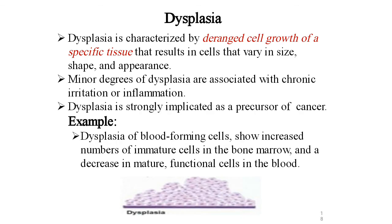Dysplasia is characterized by disordered growth of a specific tissue that results in cells that vary in size, shape, and appearance. Minor degrees of dysplasia are associated with chronic irritation or inflammation. Dysplasia is strongly implicated as a precursor of cancer. Dysplasia of blood-forming cells shows an increased number of immature cells in the bone marrow and a decrease in mature functional cells in the blood.